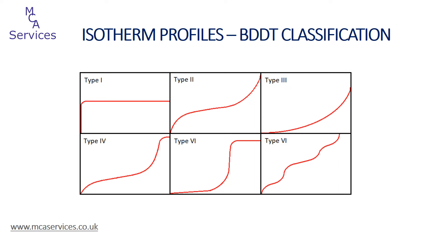Isotherms are conveniently described by the BDDT classification, named after its creators Brunauer, Deming, Deming and Teller. In this scheme adsorption isotherms are classified according to their shape or profile. More recent additions have expanded on this, and we'll have a look at these as we consider each type in turn. The most common isotherm types we encounter with gas adsorption at cryogenic temperatures are types 1, 2, and 4, but we will briefly consider the other types as well.